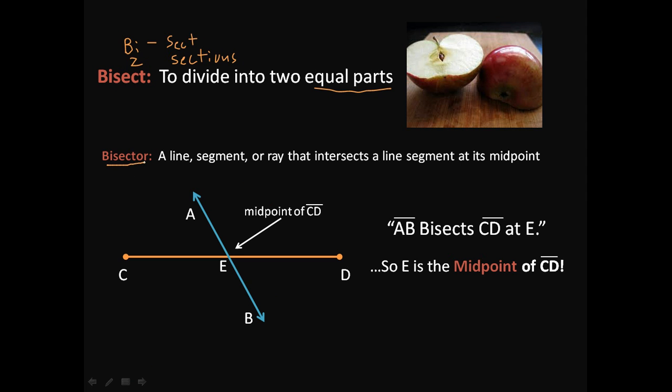So a bisector, this bisector, cuts this in half. So that means that this side over here is going to be the same length as this side over here. Not too tricky. So all a bisector does is it makes a what? A bisector makes a midpoint. So this bisector makes a midpoint here at E because this line bisects, if I say AB bisects CD, then I have a midpoint here at E. Pretty simple.